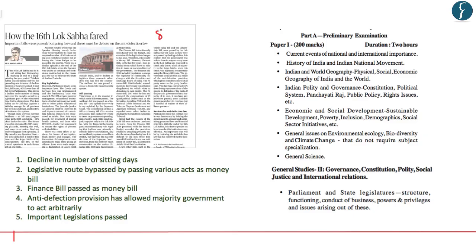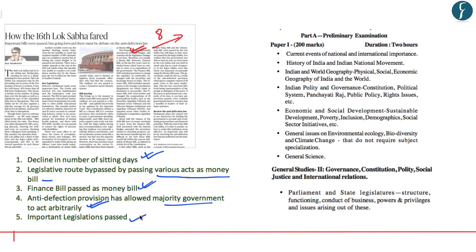The next article also appears on page number 8. It says 'How the 16th Lok Sabha fared: Important bills were passed, but going forward there must be debate on the anti-defection law.' This article highlights diverse aspects of the 16th Lok Sabha: decline in number of sitting days, legislative routes bypassed by passing acts as money bills, finance bills passed as money bills, anti-defection provision under the 10th schedule allowing the majority government to act arbitrarily, and important legislations passed by the 16th Lok Sabha. This topic falls under Indian polity and governance in prelims and GS Paper 2 in mains.